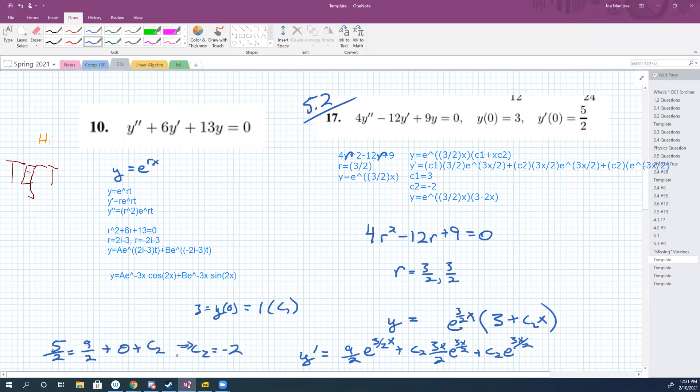Say again? Oh no sorry, you didn't forget. I keep seeing your nine halves, I'm like you forgot your c1, but that's because you already plugged it in. I just multiplied together. So you got c2 is negative two.